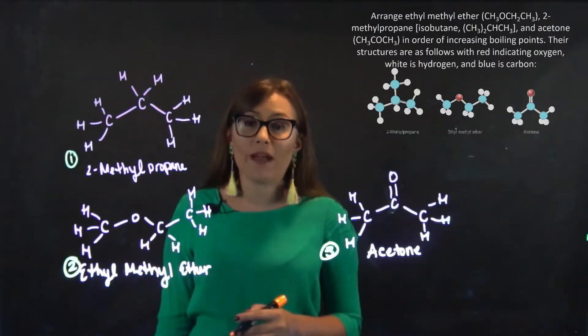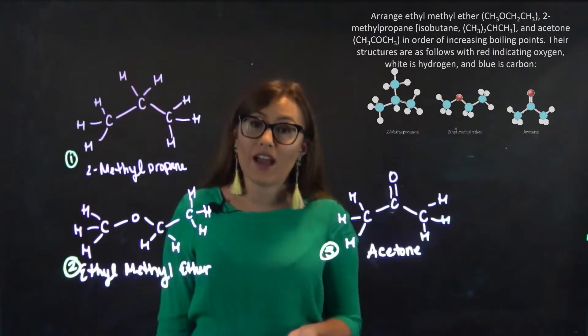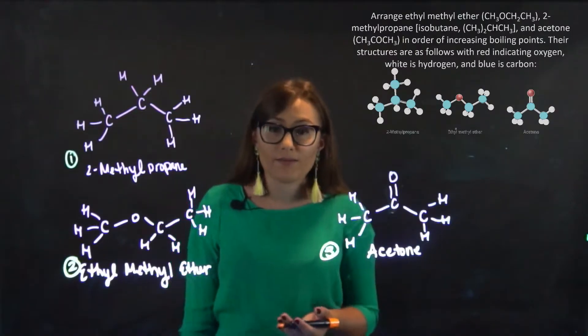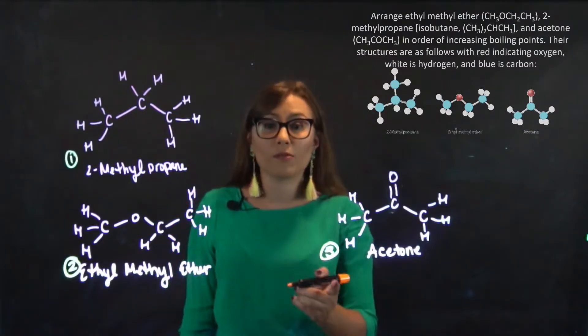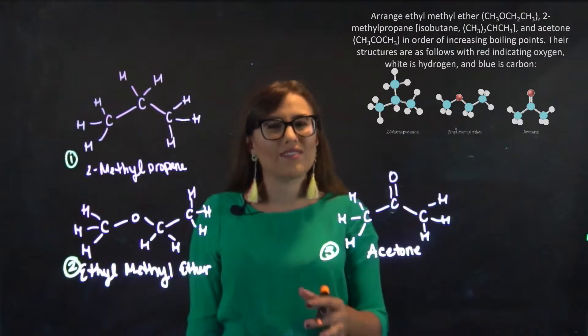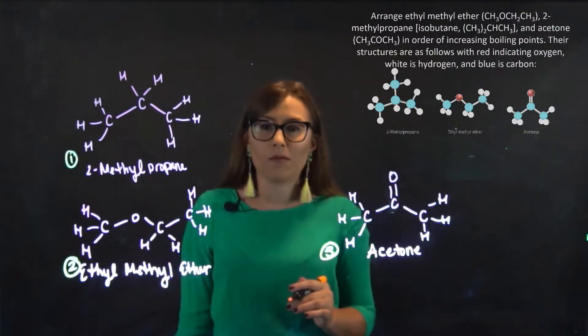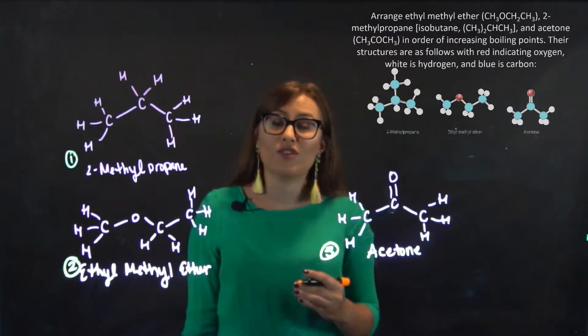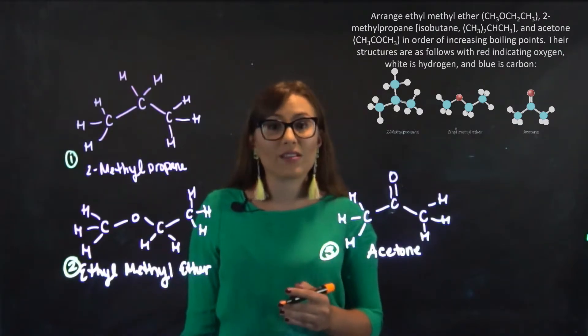Compounds with a higher molar mass are going to have a higher melting point along with if it is polar or not. The following compounds all have similar molecular weights, all ranging between 58 to 60 grams per mole. So molar mass is not going to be the indicator that we use to determine which of these have the highest boiling points.